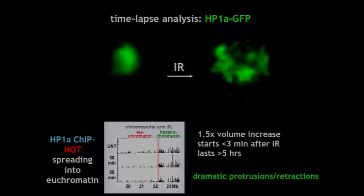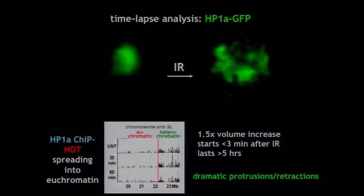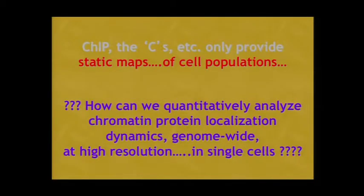When you do a ChIP experiment and look at HP1A — in untreated cells, 30 minutes after irradiation, and 60 minutes after irradiation — you still have HP1 in the heterochromatin. This means it's an expansion of this domain, not spreading of the protein into euchromatin. But it also tells you that if you're just doing a ChIP experiment, you'll say nothing's happened — when in fact a lot has happened. This gives rise to the point that ChIP, Hi-C, 5C, 4C — really only provide static maps of cell populations. This is a real problem for understanding function using the kind of data modern genomic projects produce.